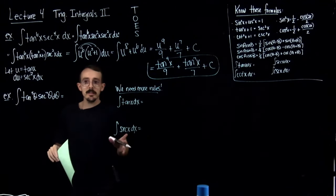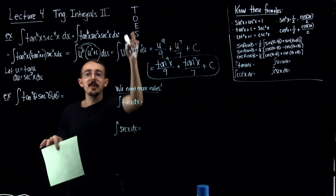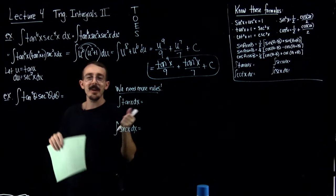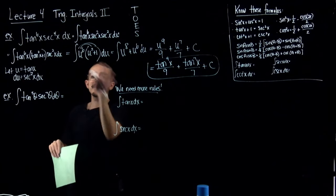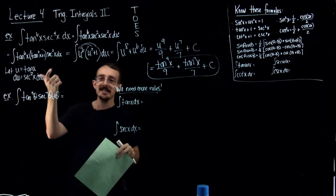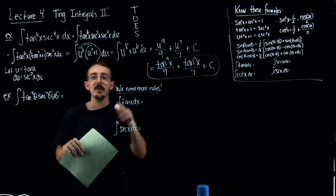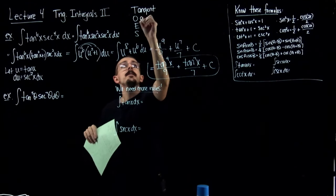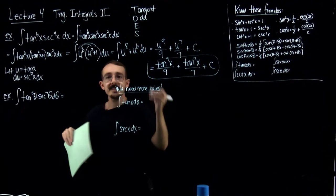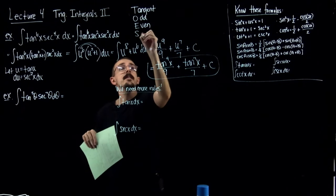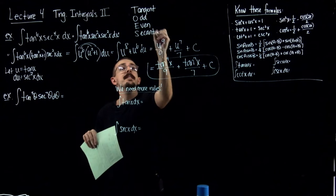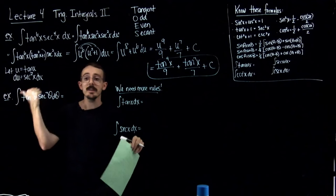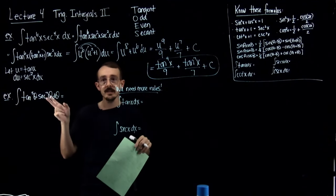Now I'm not super weird — there is a reason why I have the word TOAST written here. This is a mnemonic device to help you remember what to do when dealing with tangents and secants. What you're looking for is the power of tangent to be odd, or the power of secant to be even. In either of those two cases, we can do this systematic process just like we did with sines and cosines.